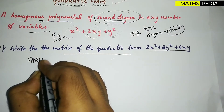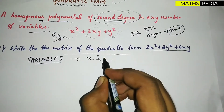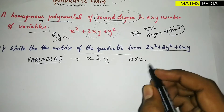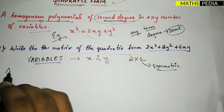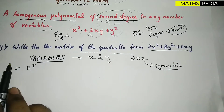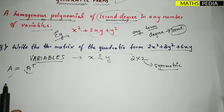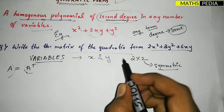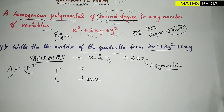First, see how many variables are involved. Here we have x and y — two variables — so the matrix will be of order 2×2. Always remember, the matrix you get will be symmetric. A symmetric matrix means A equals A-transpose — whatever the given matrix is, it will equal its transpose. We'll verify this.